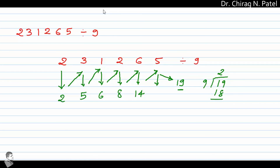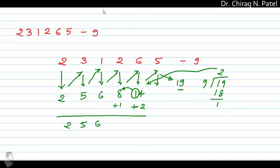Now 19 is divided by 9: 9 times 2 is 18, remainder 1. That 2 is added in, and the leading digit 1 of this two-digit number goes into the addition of the number before it. Summing up all values, we get 2, 5, 6, 9, and 6 as the answer, with something remaining in the remainder portion — put that after the decimal point. This is the final answer. Thank you for watching; you can definitely use this math trick to divide any large number by 9 very quickly and easily.